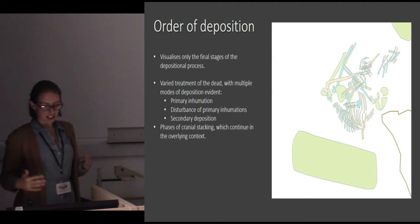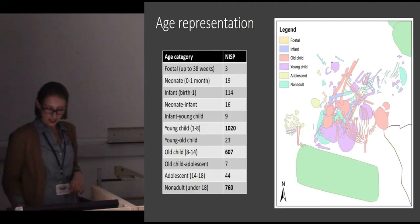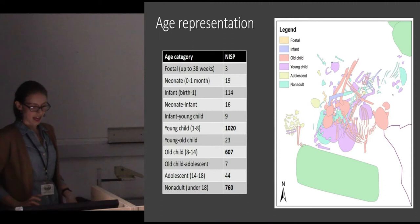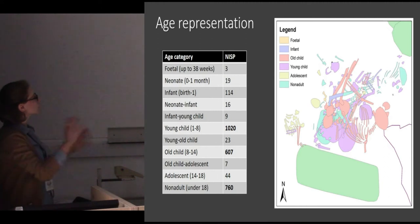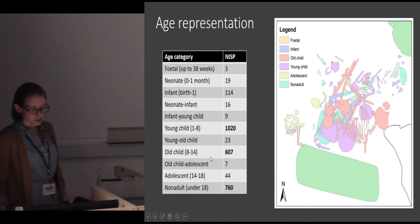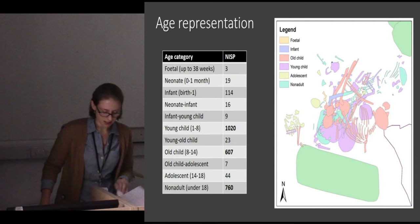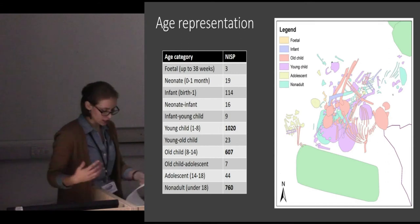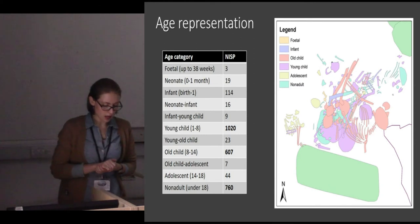We can see that there are varied treatments of the dead here — multiple modes of deposition: primary inhumation, secondary deposition, and cranial stacking in clear phases. In terms of age representation, we have a complete range of ages, and these osteological categories are actually constraining — a lot of individuals overlap categories. We have a lot of young children and old children, but that's also because they cross over a really wide age range. Taphonomic factors don't seem to have biased much against the preservation of fetal or infant bones, except in the case of post-depositional crushing from the weight of overlying deposits.